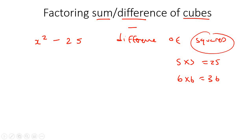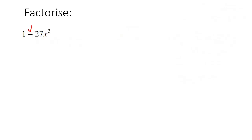Now we're going to be looking at the difference of cubes. Cubes are things like 2 times 2 times 2, or x times x times x — it's when you multiply things together three times, and that's what we call a cube. To do difference of cubes or sum of cubes, it can be a negative or a positive in the middle, there must be two terms, and each term must be a cube.